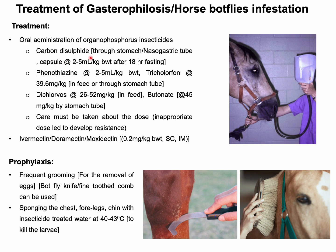Treatment of gastrophilosis: older treatments include oral administration of different organophosphate insecticides, with care taken regarding dose, as inappropriate dosing may lead to resistance. Ivermectin, doramectin, or moxidectin is recommended for treatment of this disease. Frequent grooming is highly recommended for the removal of eggs. Sponging the egg-laying areas such as the chest and forelegs with insecticide-treated water can also be done to kill the larvae.